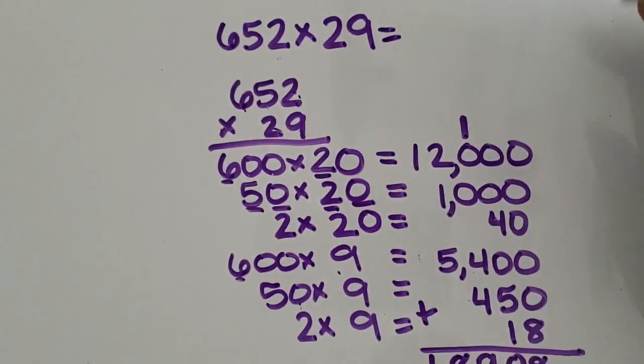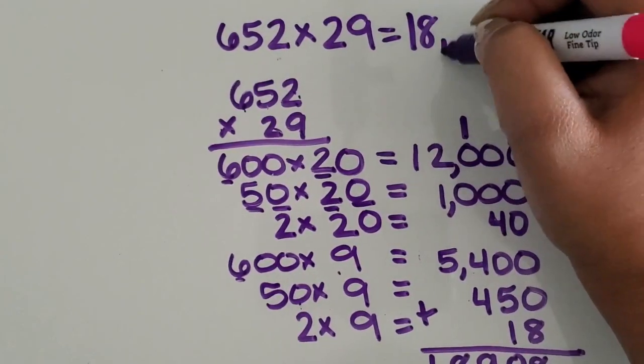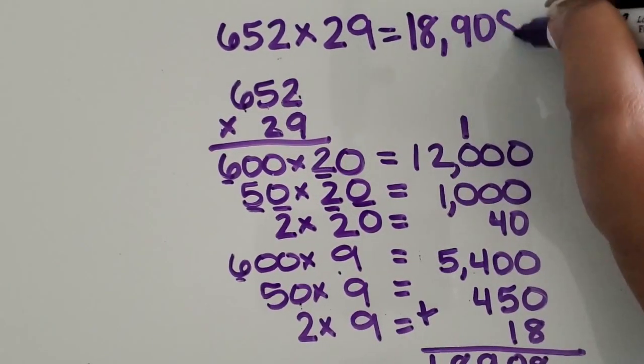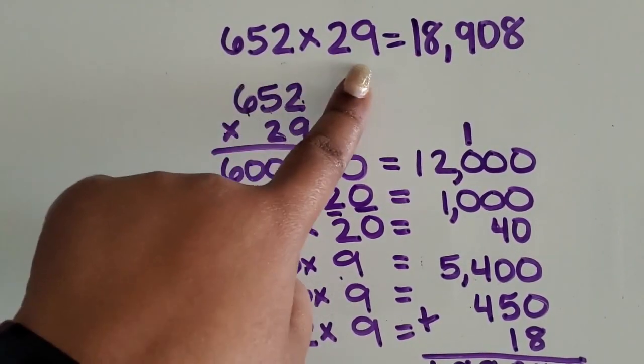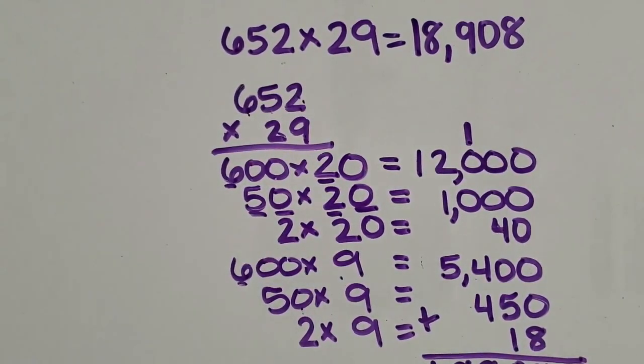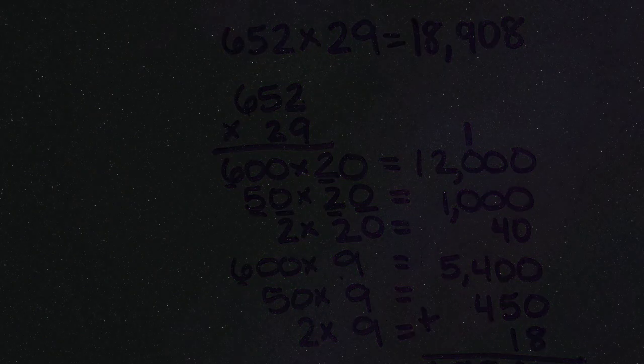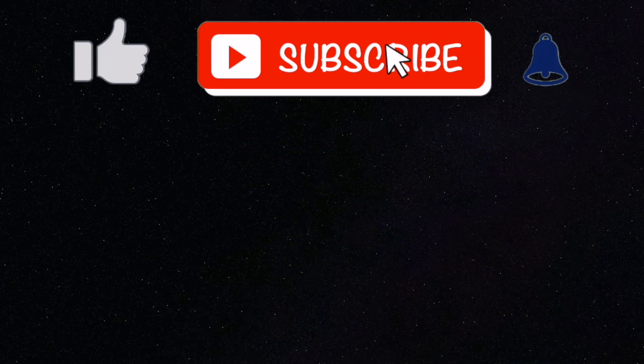I'm going to rewrite that up here as our total product. We multiplied a 3-digit number by a 2-digit number using the partial product strategy. Thank you so much for joining.